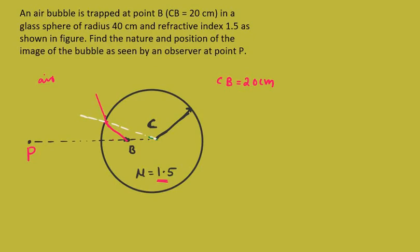If you produce this light ray backwards, you can see that the light ray will be meeting at this point on the axis. Here you will be getting the virtual image of the bubble. We need to find the location of this point.